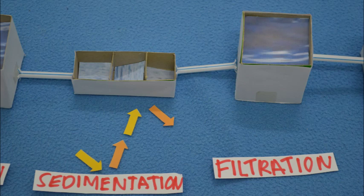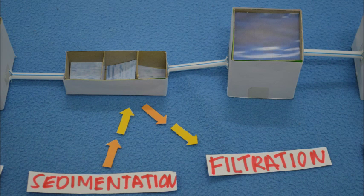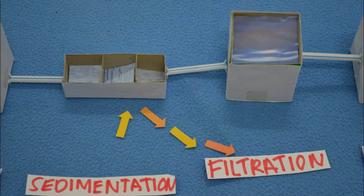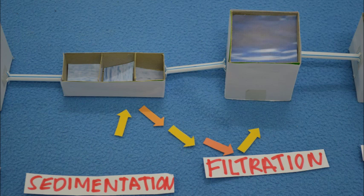The fourth stage is filtration. Water from the sedimentation tank is passed through filters to undergo the filtration process. Some filters are made of layers of sand and charcoal that help to remove smaller particles in the water. However, some filtration is done by passing water through various other media that are suitable.